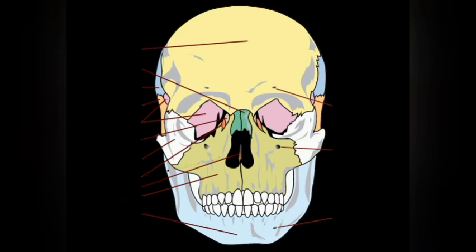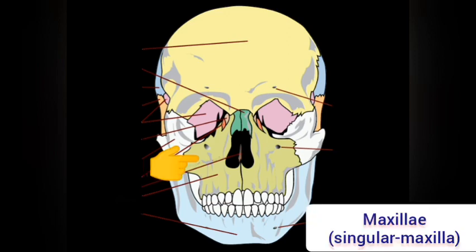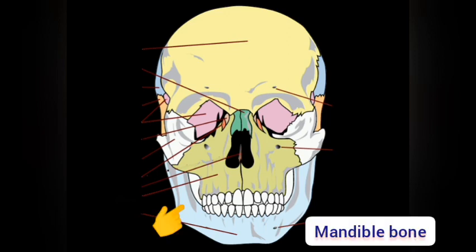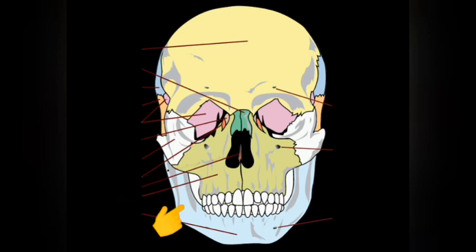The bone called the vomer bone is located there. Then we have two palatine bones. The palatine bone is found at the posterior aspect of the oral cavity, forming a part of the hard palate of the mouth. Then we have the maxilla, which is forming the hard palate of the mouth, so it is a bone located at the upper jaw. Then we have the mandible, the bone located at the lower jaw of the mouth.